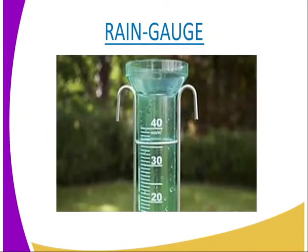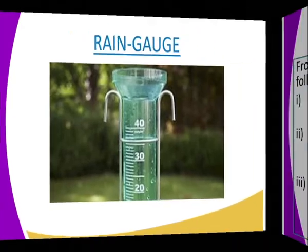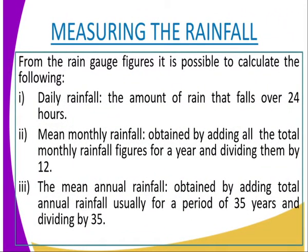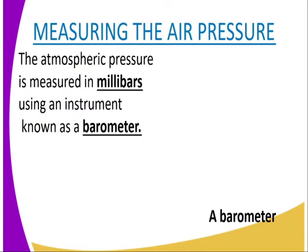The collected rainwater is emptied into a measuring cylinder which gives the amount of rainfall in millimeters for the day. We can get the daily rainfall recorded within 24 hours. We can also get the mean monthly rainfall, obtained by adding all total monthly rainfall figures for the year and dividing by 12. The mean annual rainfall is gotten by adding total annual rainfall usually for a period of 35 years and dividing by 35.